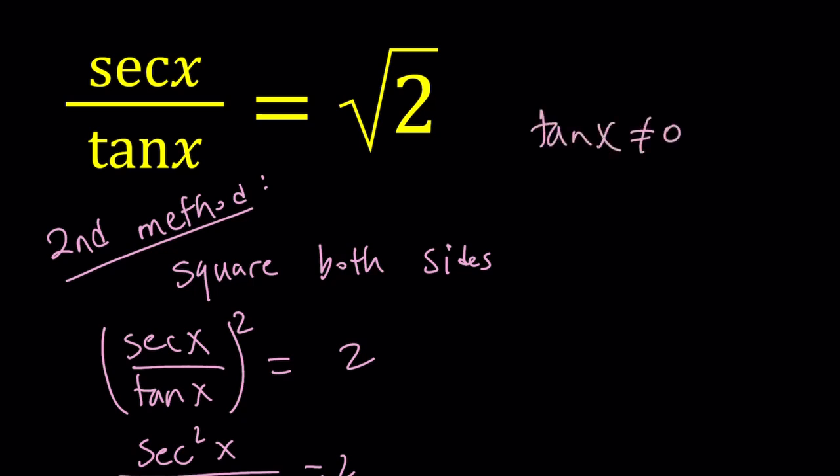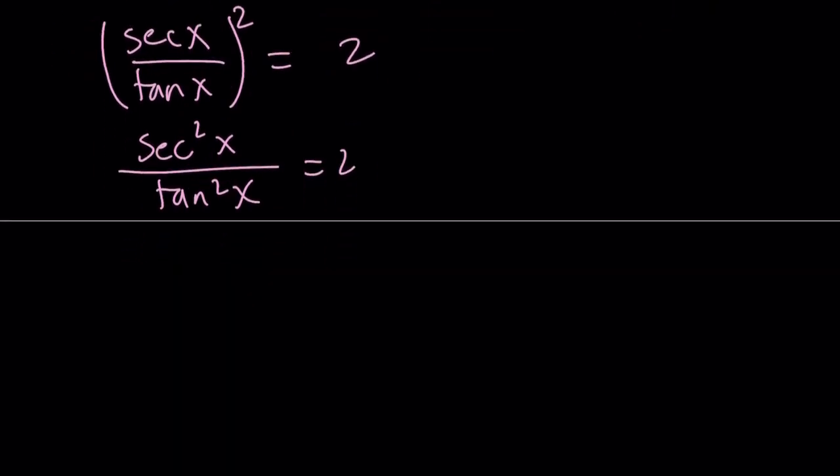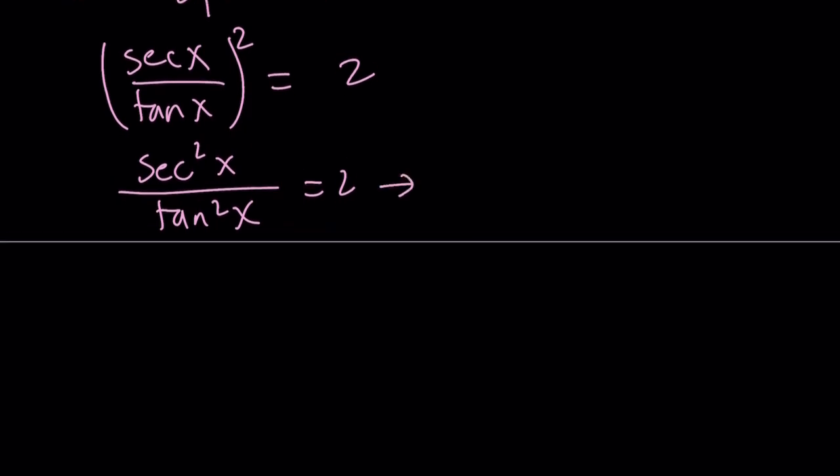And that just means that x is not going to be tangent is 0 when sine is 0, so it's not going to be an odd multiple of pi. So those are the exclusions we need to make. Let's go ahead and multiply both sides by tangent squared. And now we can use our famous identity. Secant squared is the same as 1 plus tangent squared.